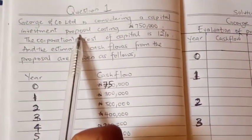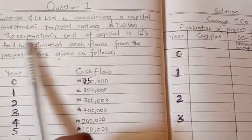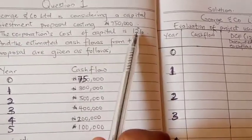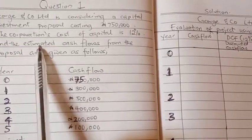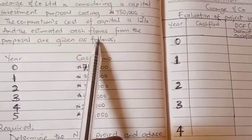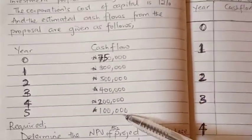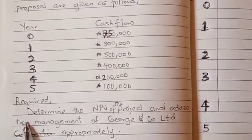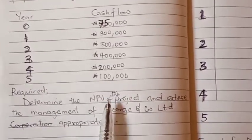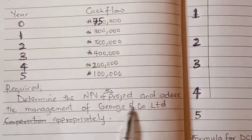This is the first question. George and Co Ltd is considering a capital investment proposal costing 750,000 naira. The corporation's cost of capital is 12% and the estimated cash flows from the proposals are given as follows, year 0 to year 5 in various cash flows.